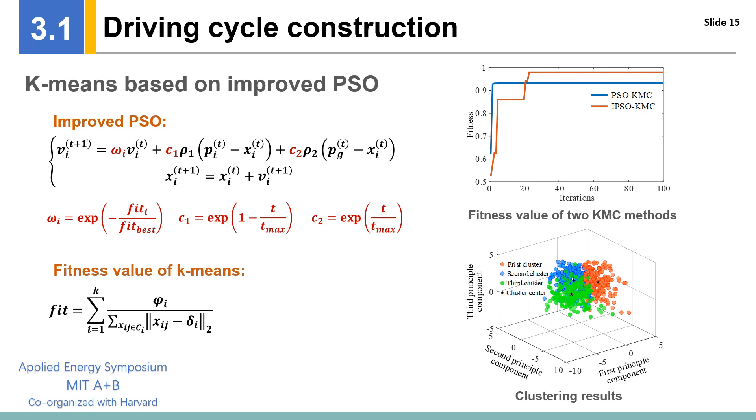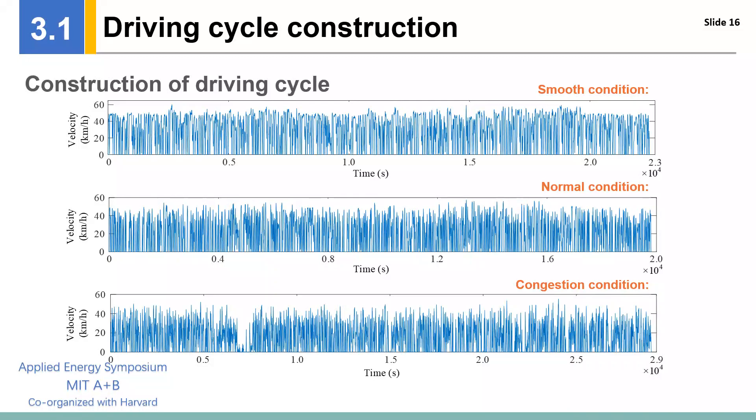The clustering results can be visualized here. Each point represents one kinematic segment sample, and all samples can be divided into three clusters clearly. Since the test bus route is from the suburban area to the urban area, the three clusters...